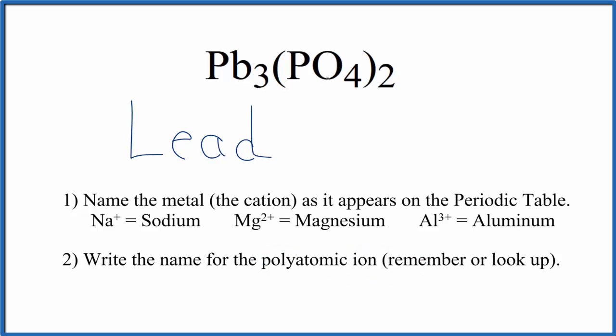You've either memorized that PO₄ is the phosphate ion, or if you're allowed, you look it up. So we have PO₄, that's the phosphate ion, and so far we have lead phosphate as the name for Pb₃(PO₄)₂.